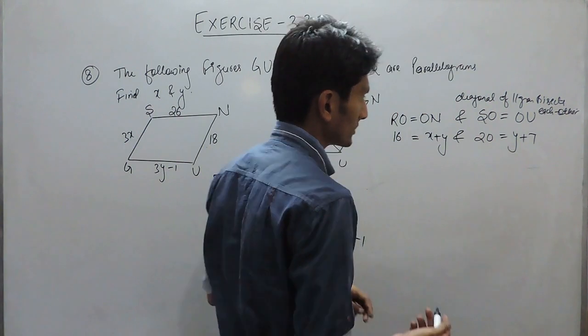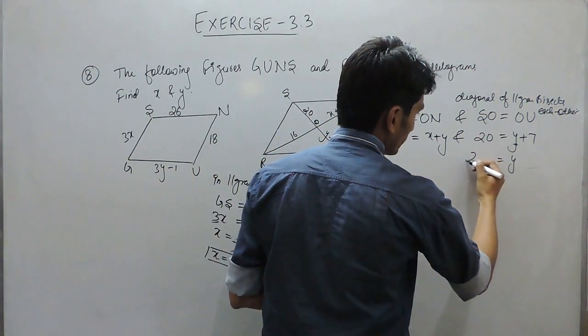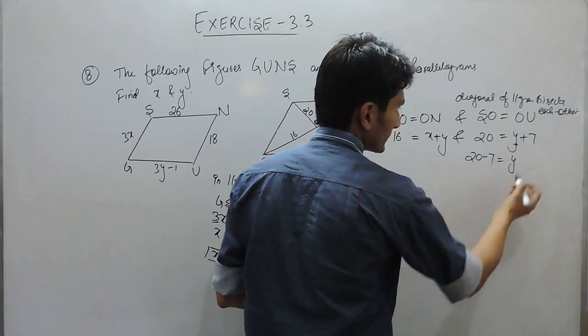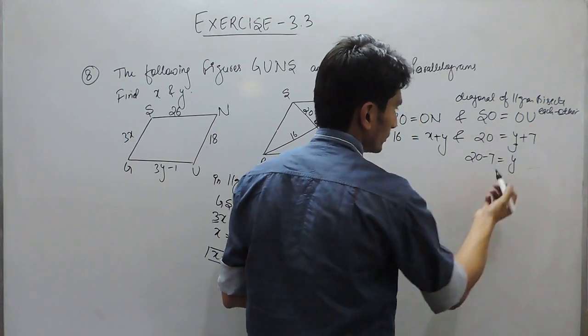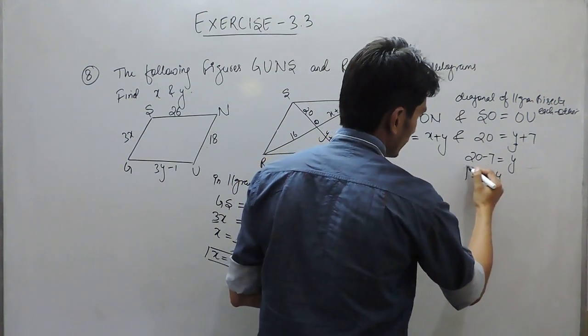You can solve this equation first because here only one variable is there. So, the value of y must be equal to 20 minus 7. And because this positive shifted to this end, it will become negative. So, the value of y must be 13.